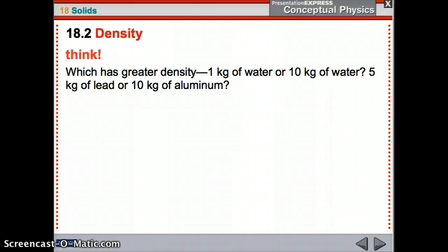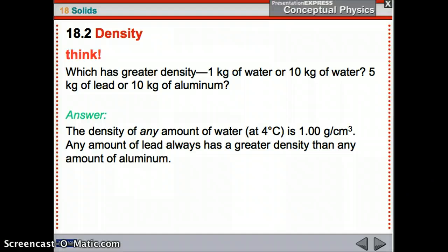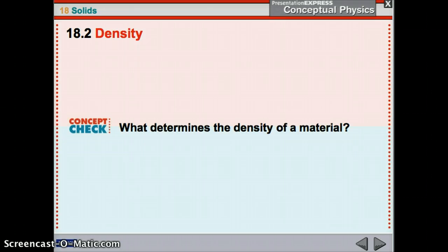Here's your problem. Which has a greater density? One kilogram of water or ten kilograms of water? How about five kilograms of lead or ten kilograms of aluminum? Water is going to have the same density. It doesn't matter how much water you have, it'll have the same. The one kilogram or ten kilograms of water, same density. Whereas lead and aluminum, who cares that I have five kilograms of lead and ten kilograms of aluminum, the density stays the same because of the property of lead and aluminum. Lead is more dense than aluminum.